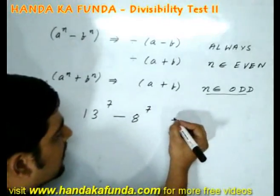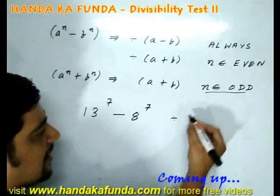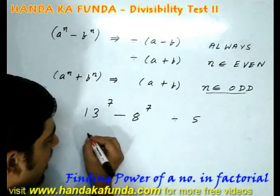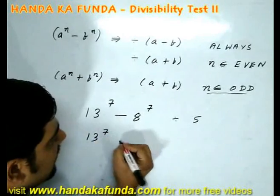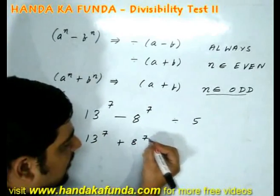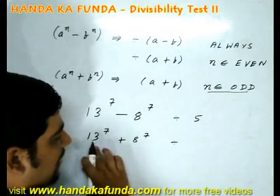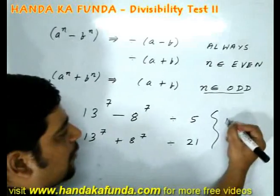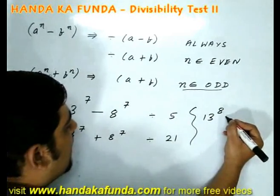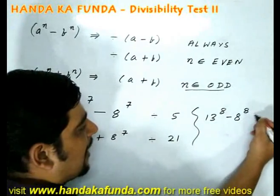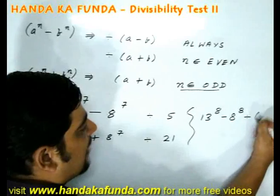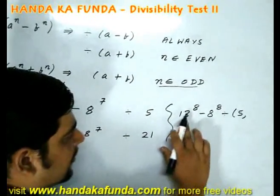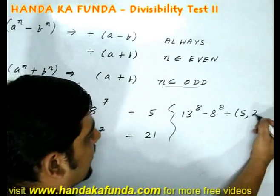13⁷ minus 8⁷ is divisible by a minus b, that is 13 minus 8 which equals 5. If we had 13⁷ plus 8⁷, it would be divisible by 13 plus 8, which is 21. And 13⁸ minus 8⁸ would be divisible by both 5 (that is 13 minus 8) and 21 (that is 13 plus 8).